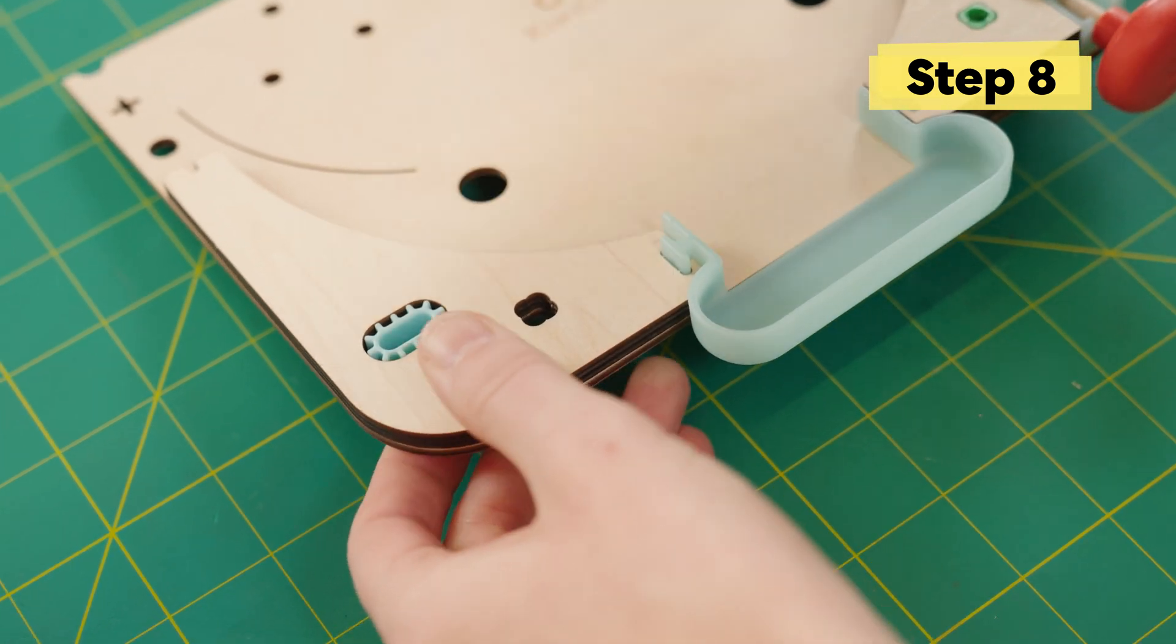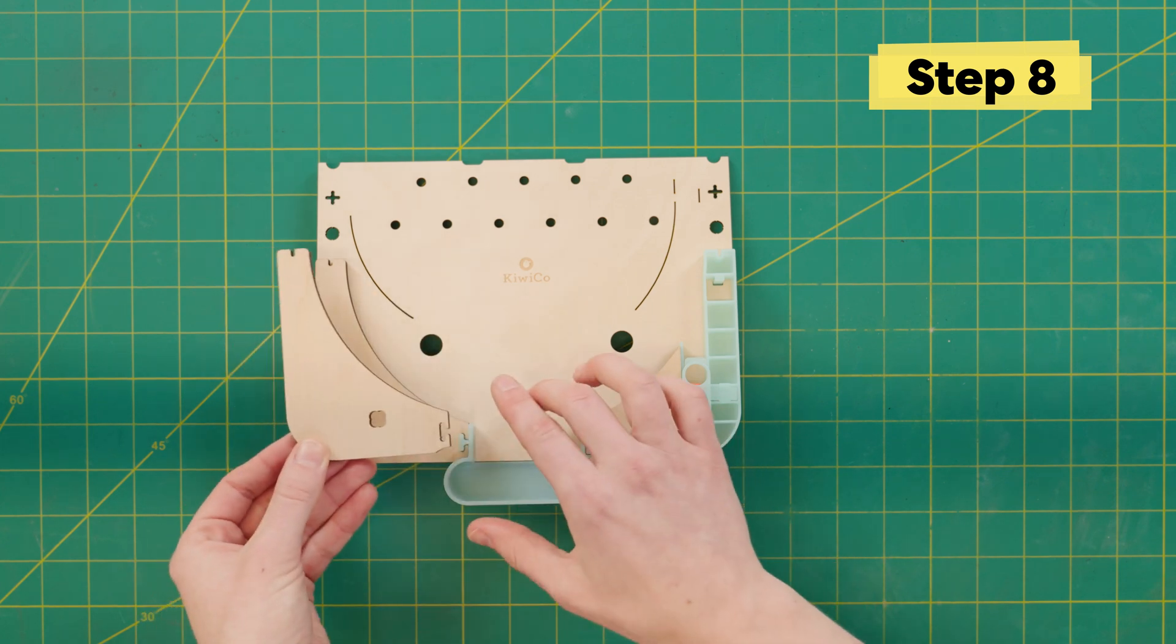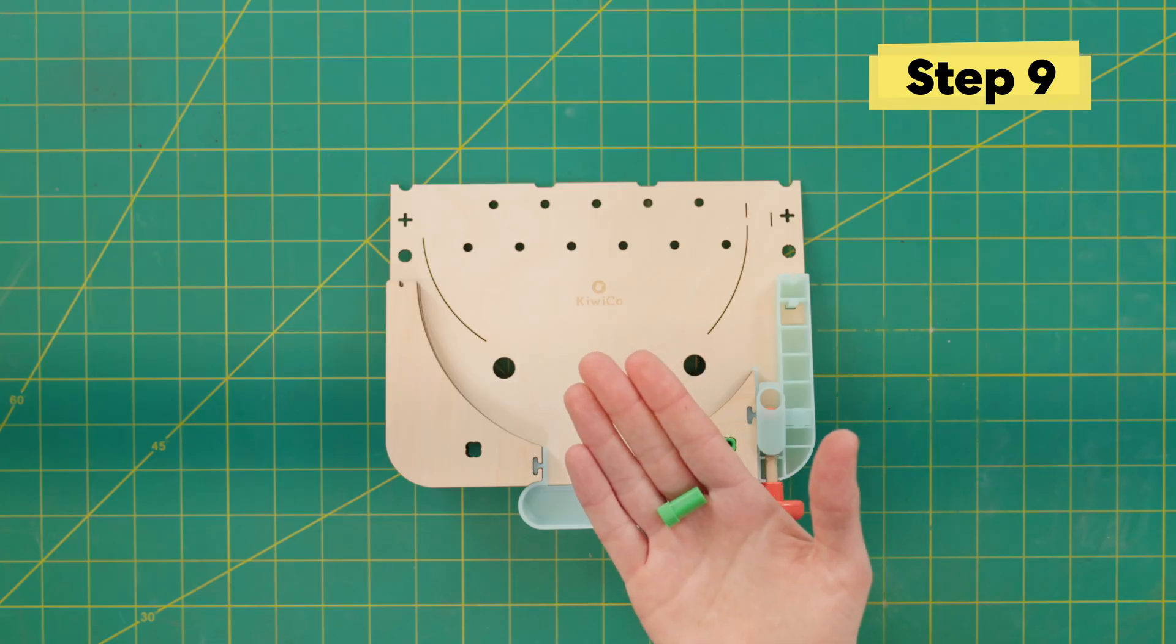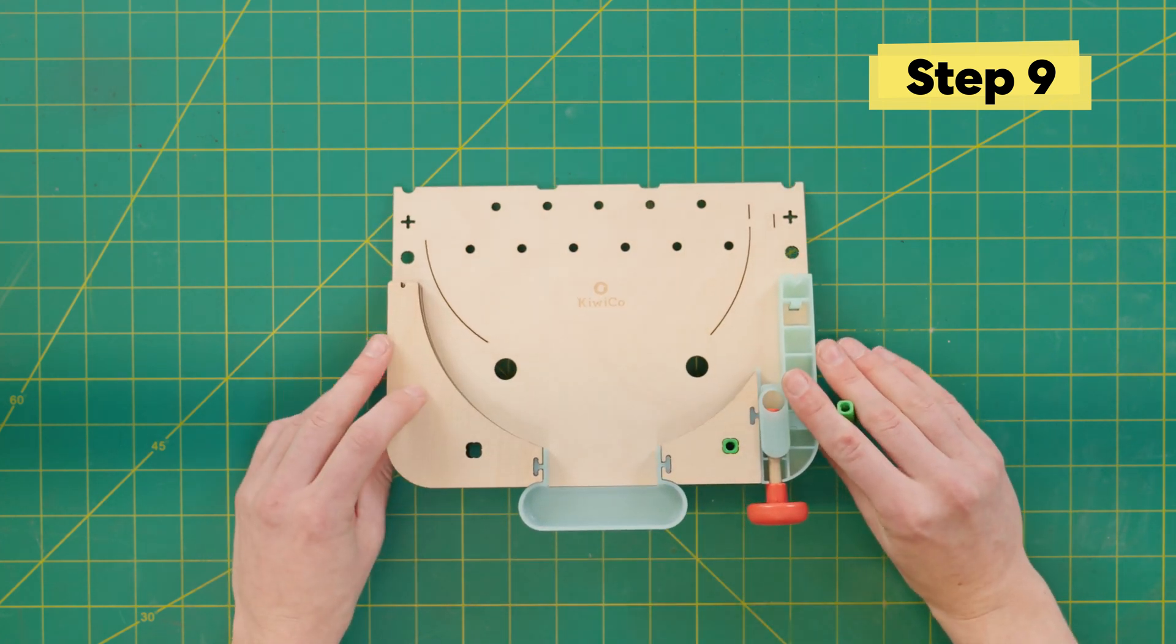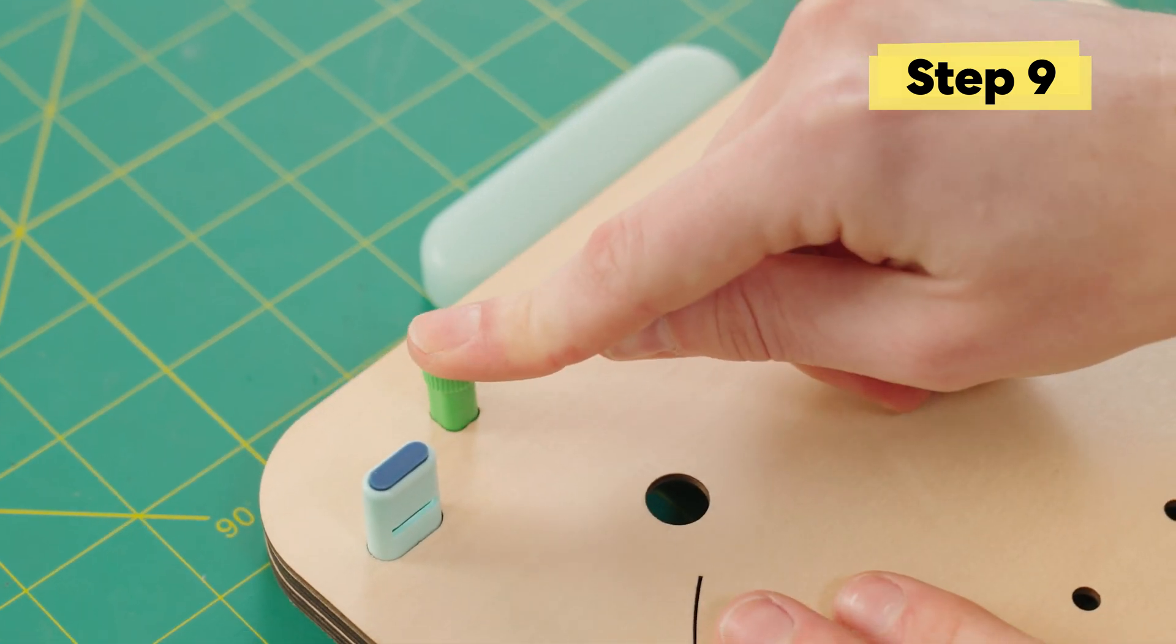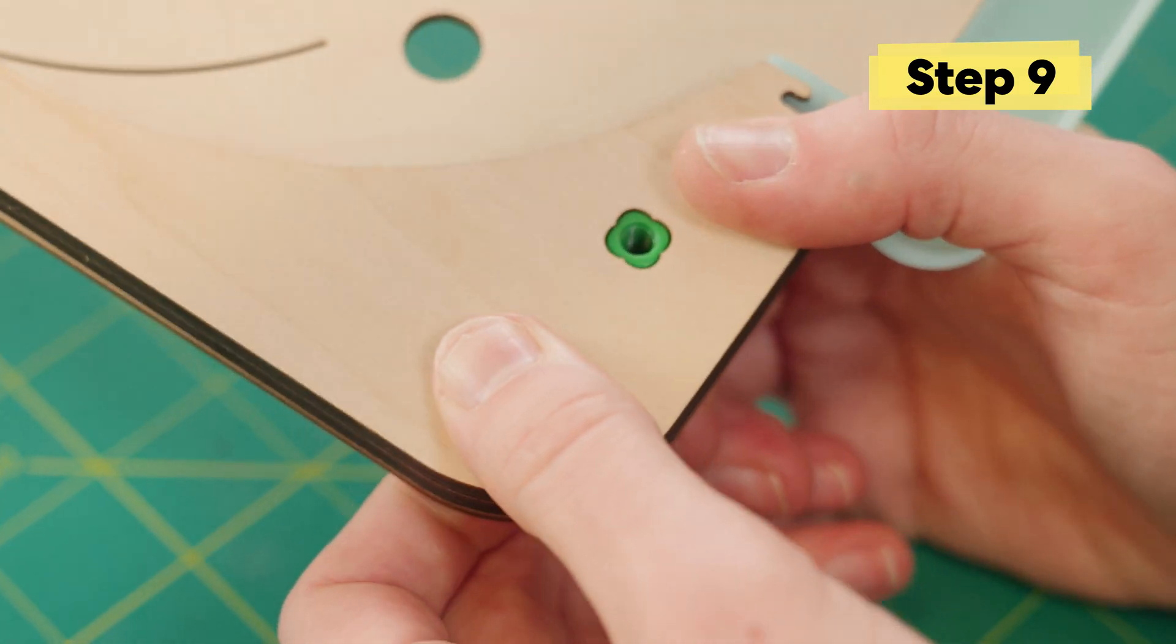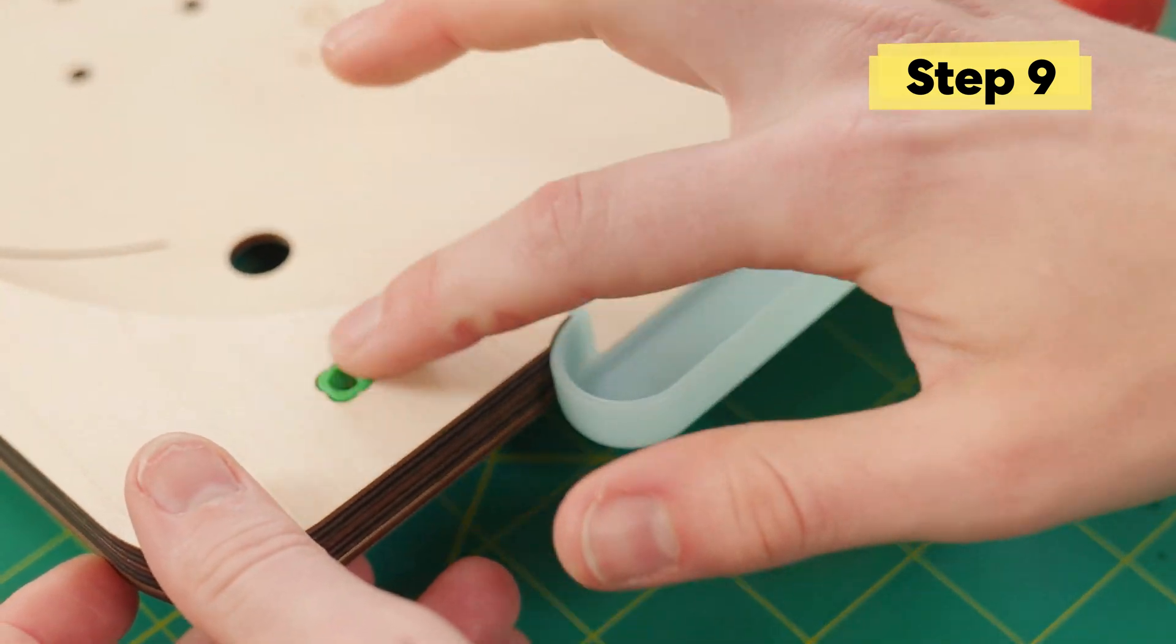Then, to lock it all together, grab a second tall green standoff and again you're going to want to push it up through the bottom of your pinball machine. Then grab another long green standoff and same thing, push it up through the bottom of your pinball machine. And again, double check that that standoff comes all the way up, nice and flush.